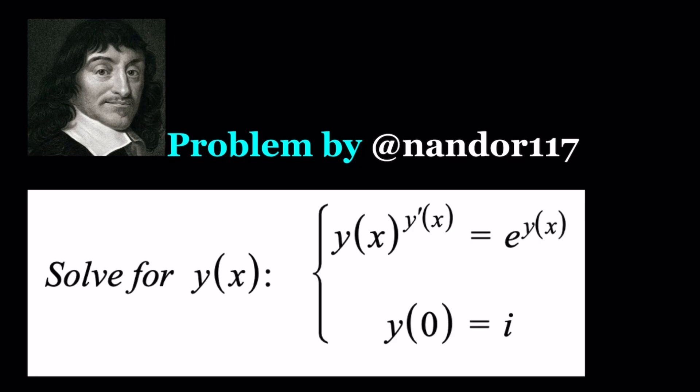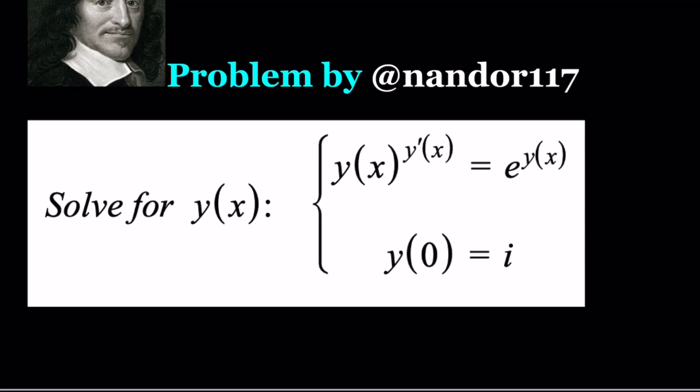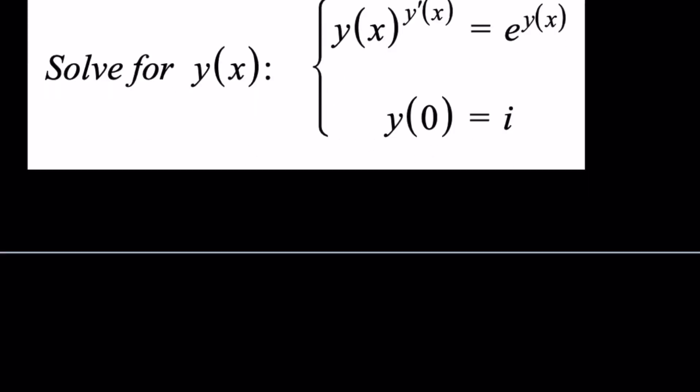So there's also an initial condition which we can take a look at at the end if I don't forget. I usually forget these things. But anyways, this is the original problem. So let's go ahead and see how we can solve this problem. There's obviously more than one way to do it. We have y to the power y prime equals e to the power y. The base is y on one side and it's the exponent on the right hand side, and then the derivative comes in. It's really a beautiful mixture of y and y prime.